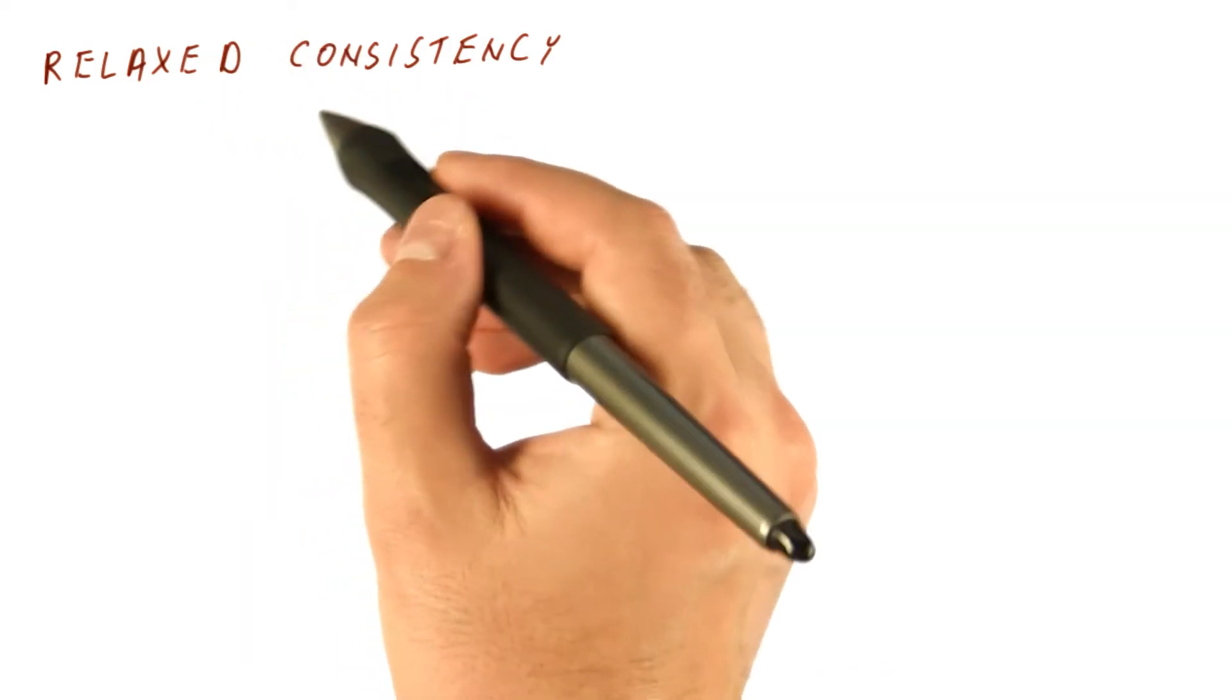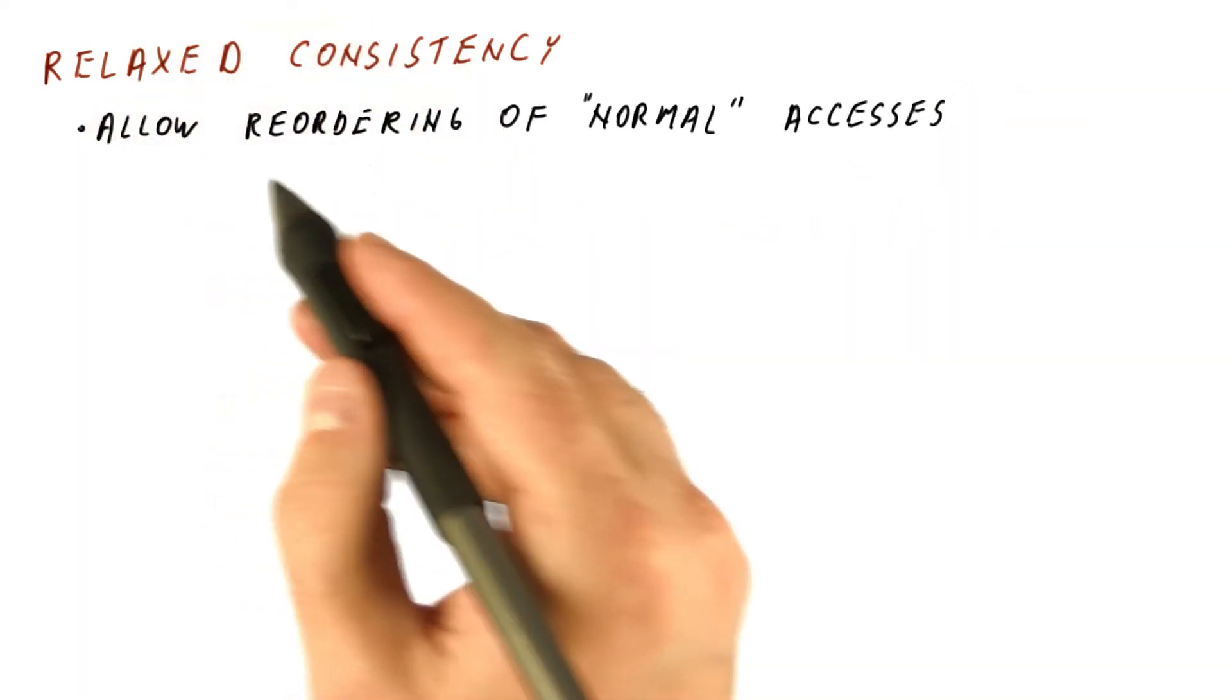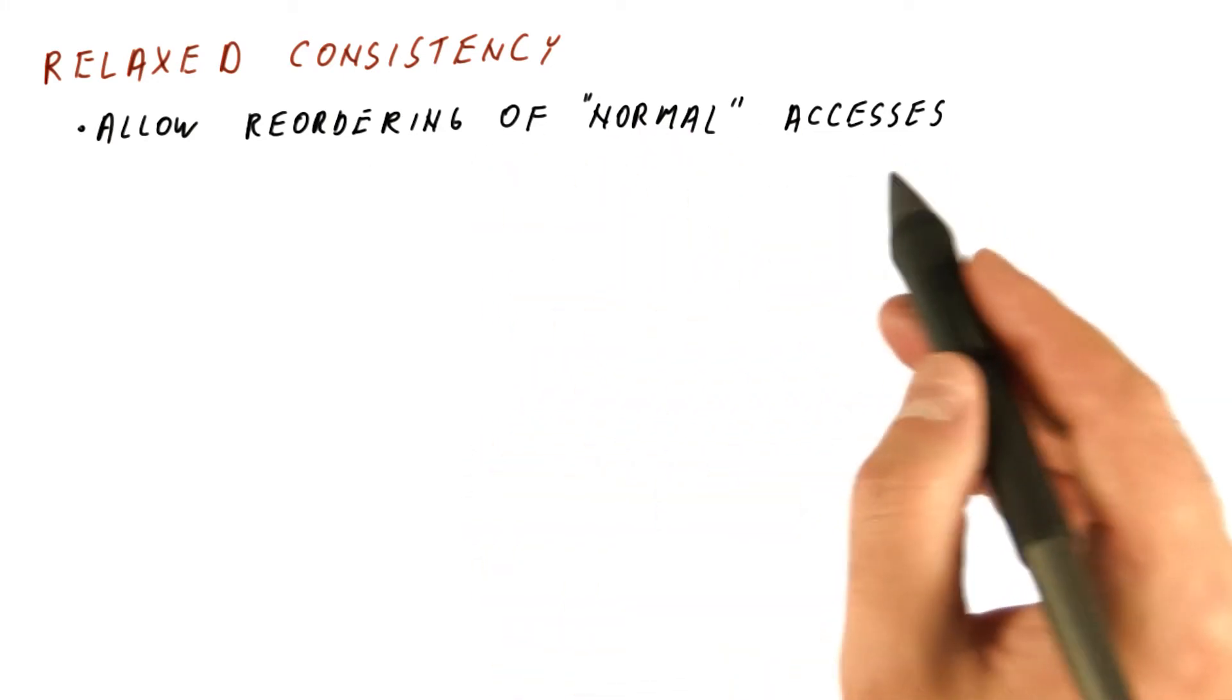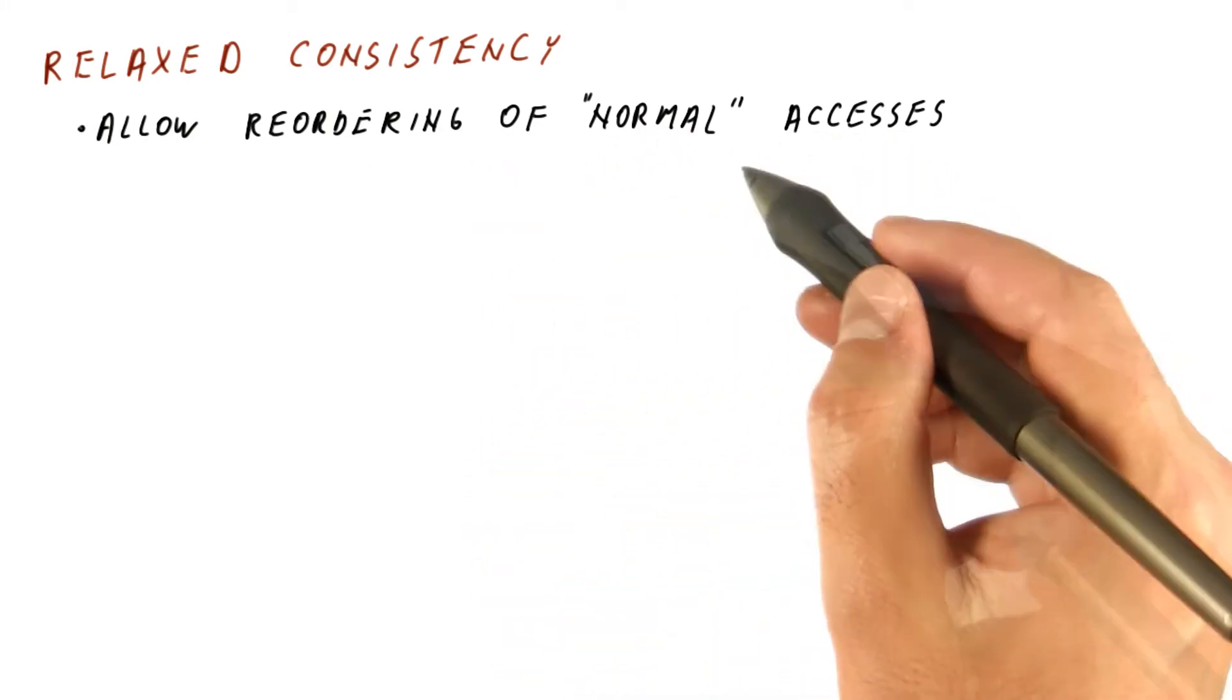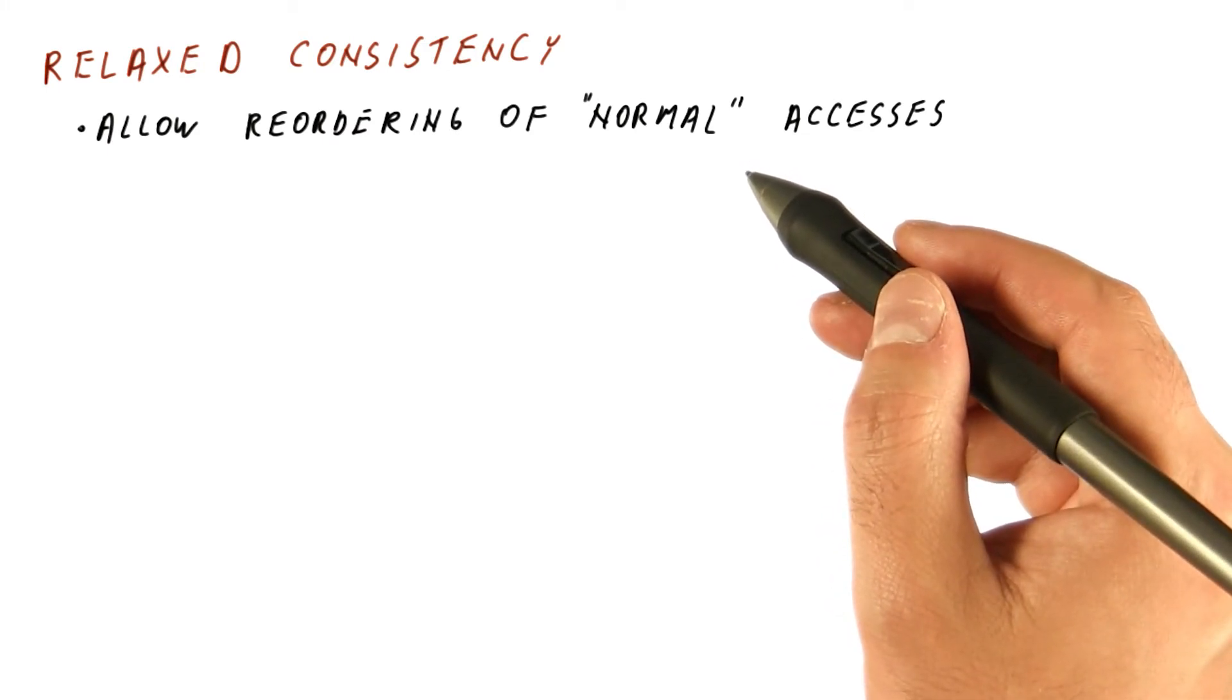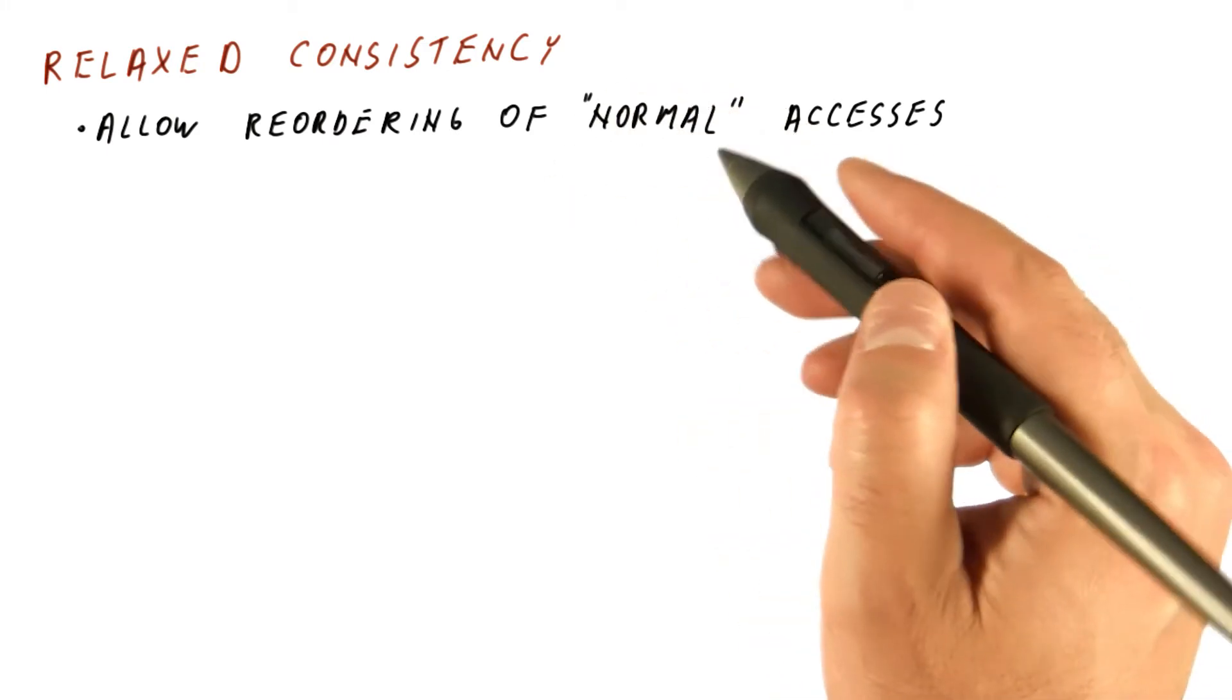So really, when we do relaxed consistency, we allow reordering of normal accesses according to the four types of ordering. So for example, our reads can now be reordered, but only if these are normal accesses.